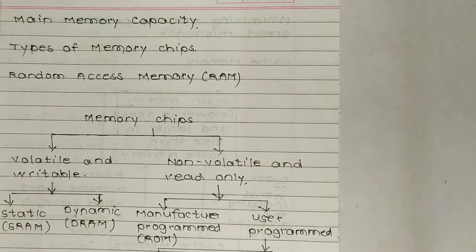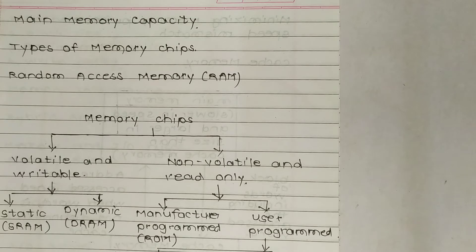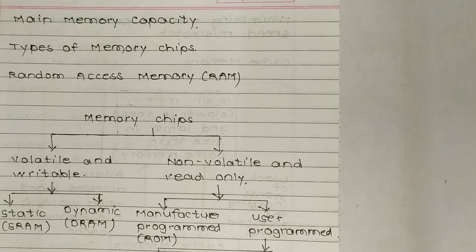Or gigabytes (GB), which is equal to 2 raised to 30 bytes of storage. Therefore, a computer having 2 GB of memory is capable of storing 2,147,483,648 characters.